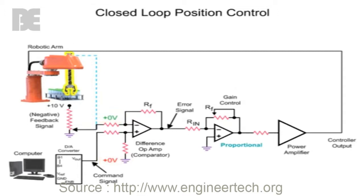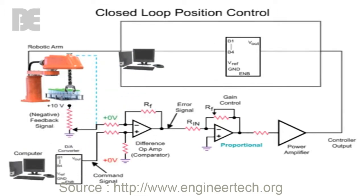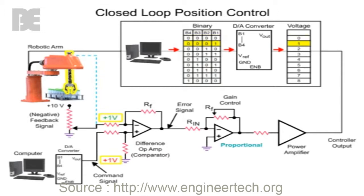For example, with the arm at the bottle pick position, the potentiometer output voltage of zero matches the command signal of zero from the computer. To change the arm to another position, a command signal from the computer is required. The command signal consists of binary numbers that increment until a value representing the desired position is reached. The binary value is then converted to an analog voltage by the digital to analog converter, indicating the position that the arm is required to move.